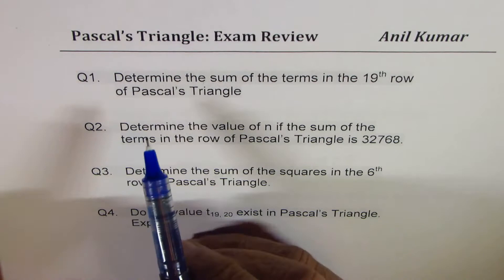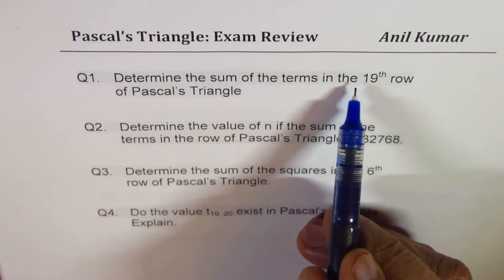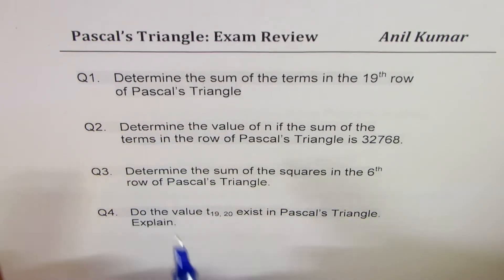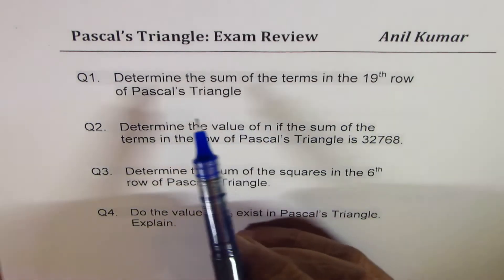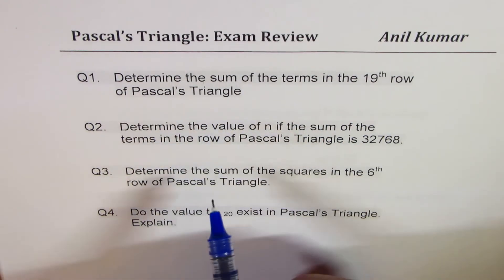Question number one here is, determine the sum of the terms in the 19th row of Pascal's Triangle. You can always pause the video, copy these questions, try them out, and then look into my suggestions. So let's answer this one.